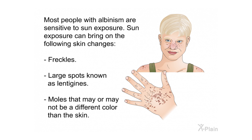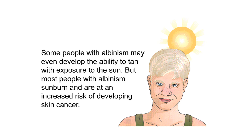Most people with albinism are sensitive to sun exposure. Sun exposure can bring on freckles, large spots known as lentigines, and moles that may or may not be a different color than the skin. Some people with albinism may develop the ability to tan with sun exposure, but most people with albinism sunburn and are at an increased risk of developing skin cancer.